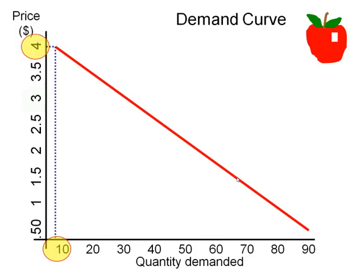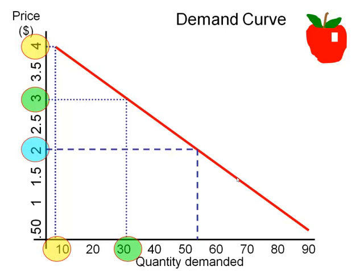If price is a bit lower, suppose $3, how many apples will our grannies purchase? They will purchase approximately 30 apples if the price is $3. Our demand curve shows that at a price of $2, demand will be approximately 55 apples. And if the price were to go as low as $1, demand would increase to just under 80 apples.